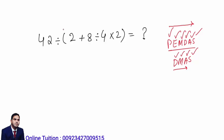First of all in this question we will solve the bracket. Inside the bracket you can see there is addition, division, and multiplication. We have to follow the rules — DMAS means first look for the division sign, so we will solve this division sign first. 2 plus 4 divided by 8 — we solve 8 divided by 4 equals 2, so inside the bracket we now have 2 plus 2 multiplied by 2.